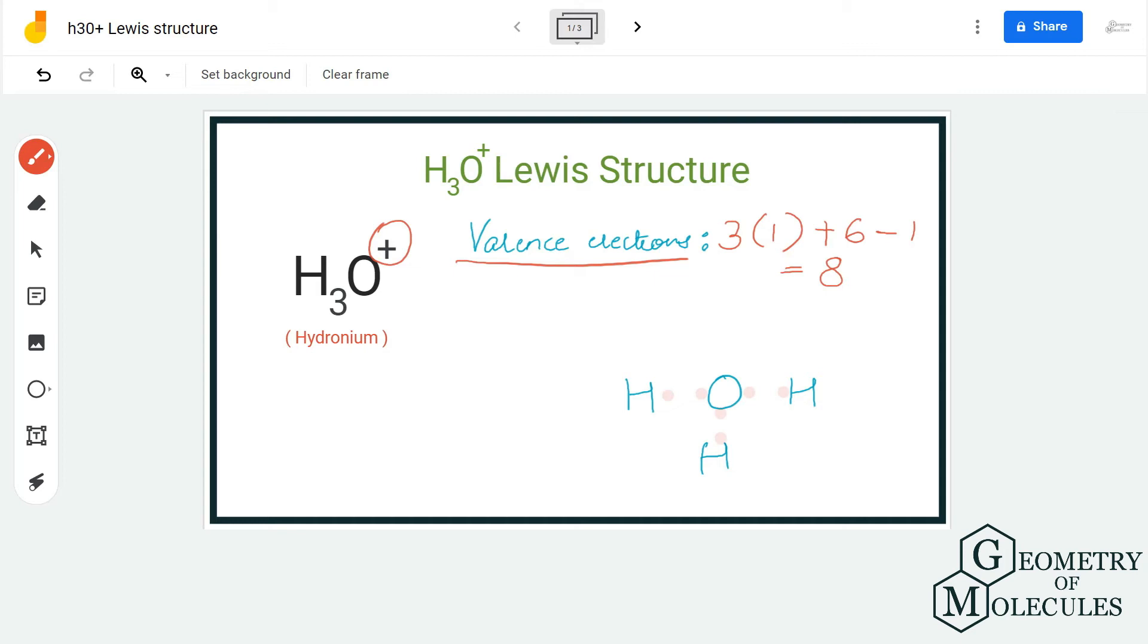Now if you look at this structure, each hydrogen atom has two valence electrons, which means it has a complete outer shell because hydrogen atom just needs two valence electrons in its outer shell. So all hydrogen atoms have complete outer shells, and now we are only left with two valence electrons.